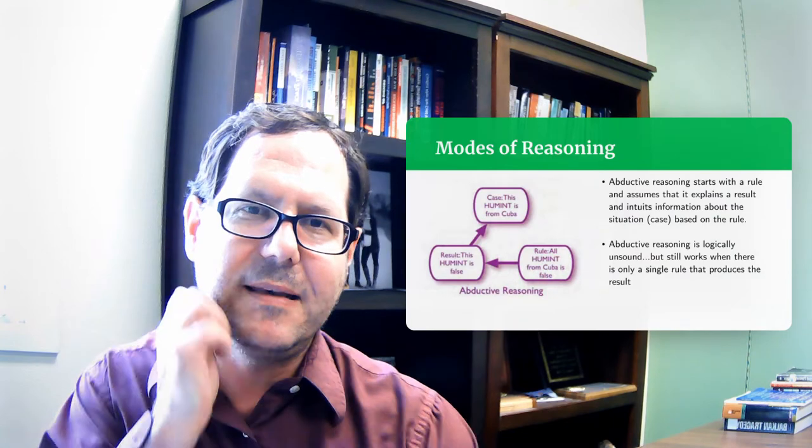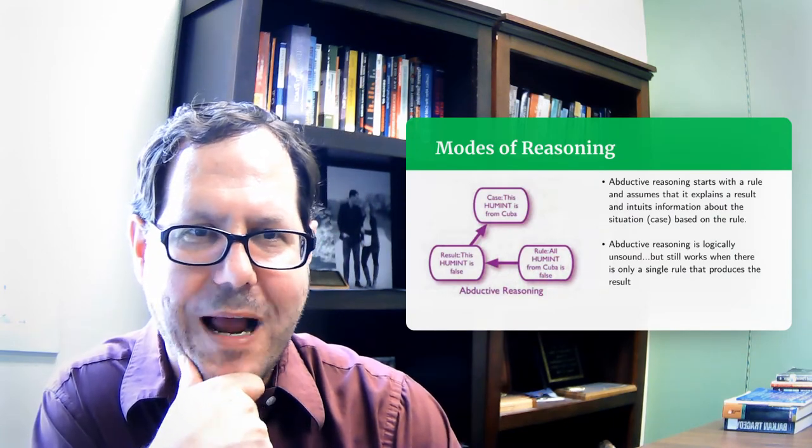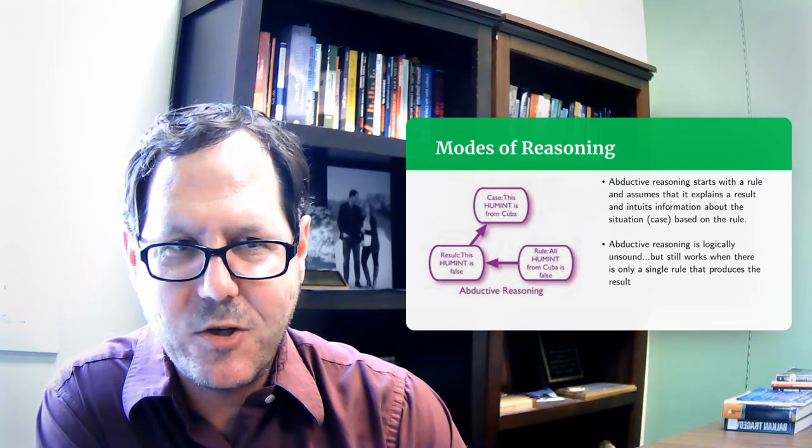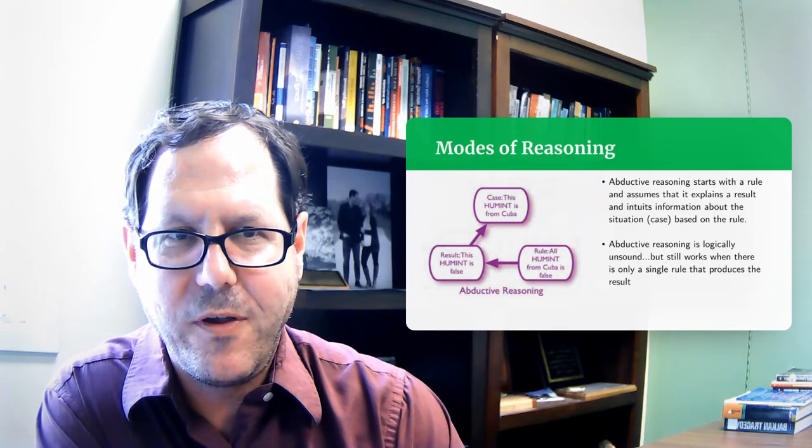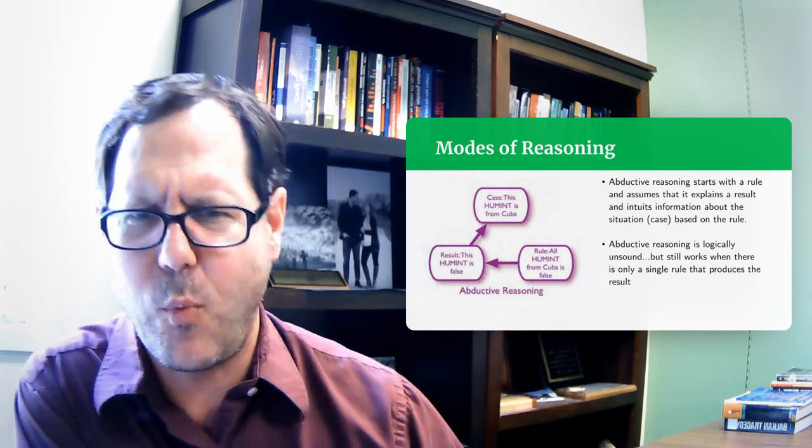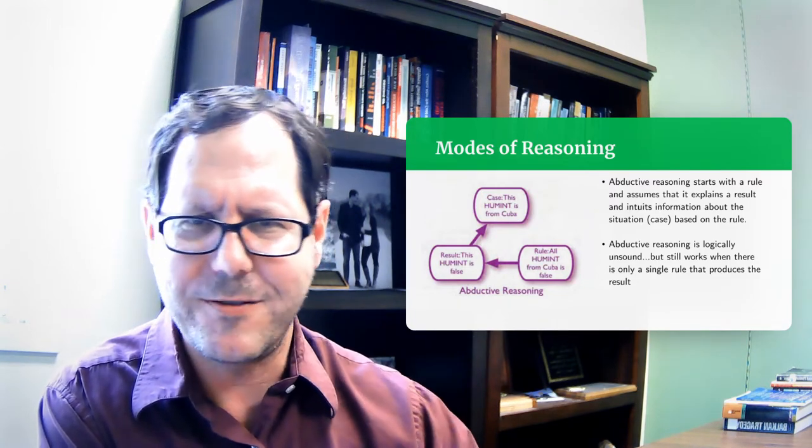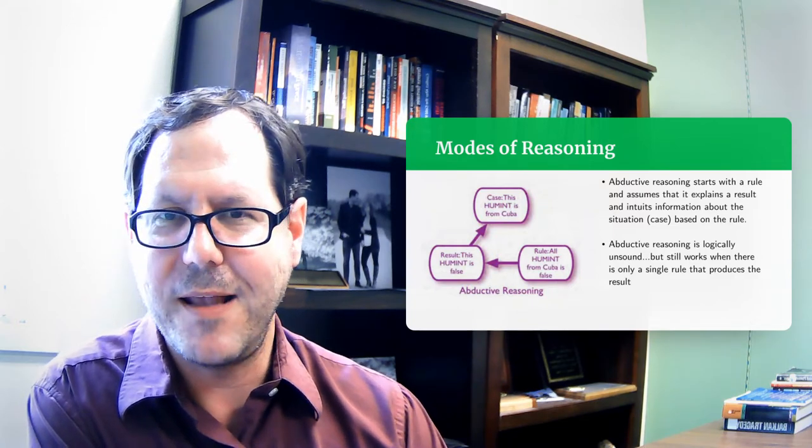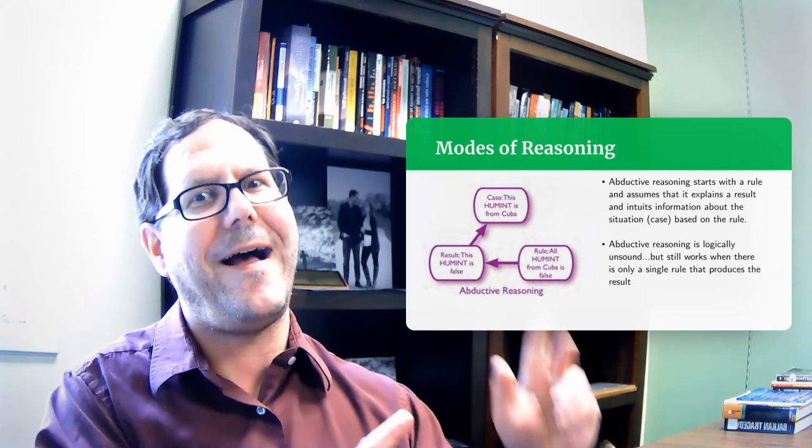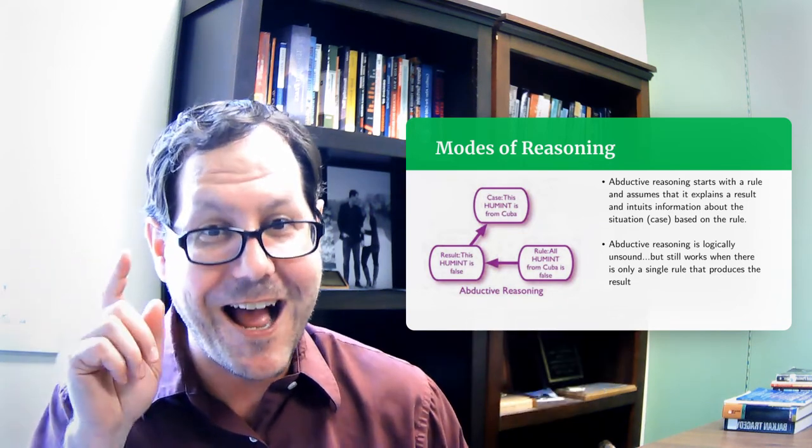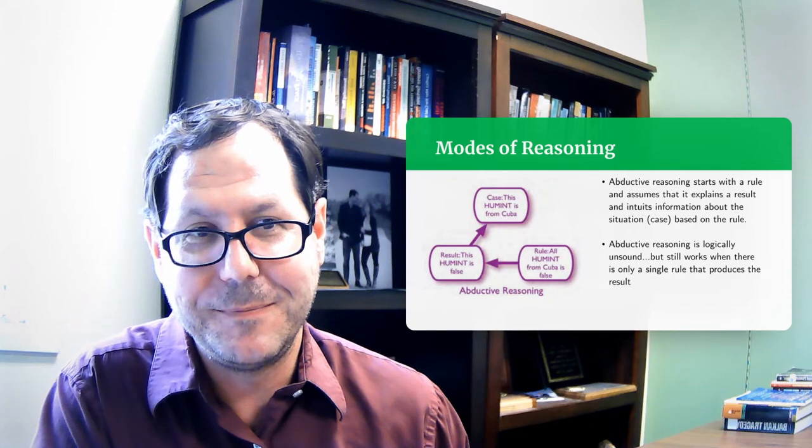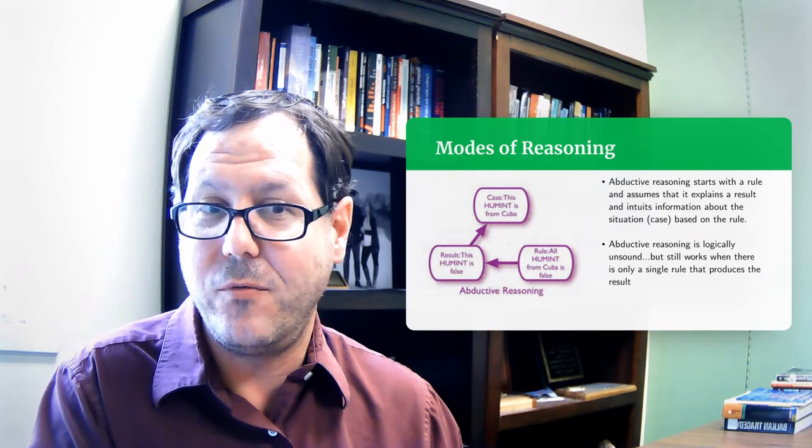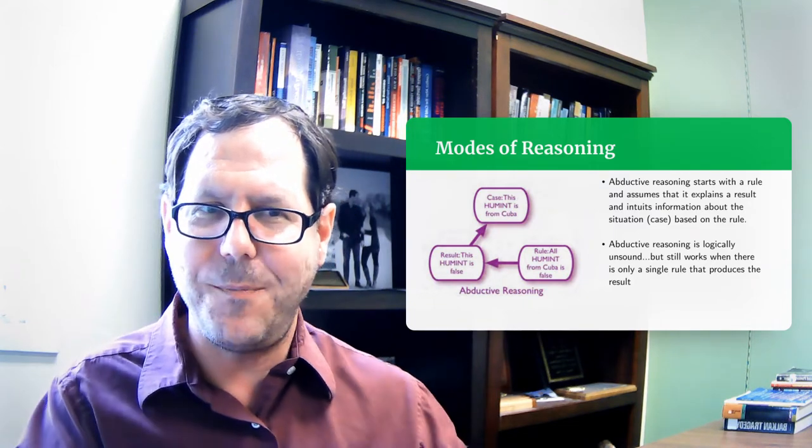There's a third mode of reasoning that is really tricky, and we can easily get trapped in as human beings. It's abductive reasoning. And it starts with a rule and assumes that it explains the result, and therefore intuits something about the case. I'll stick with the Cuba example. The rule is, all human intelligence from Cuba is false. And then someone says, this human intelligence is false. And you say, aha! False human intelligence. I bet it's coming from Cuba. That actually is not a crazy thing to intuit based on the rule.